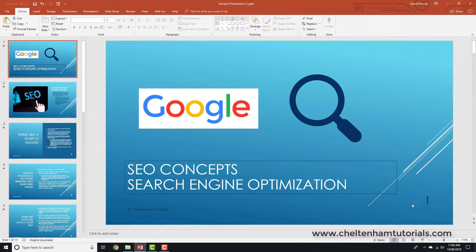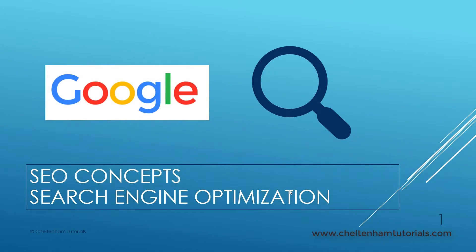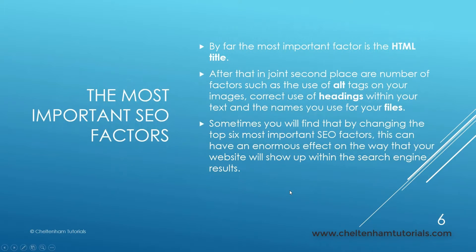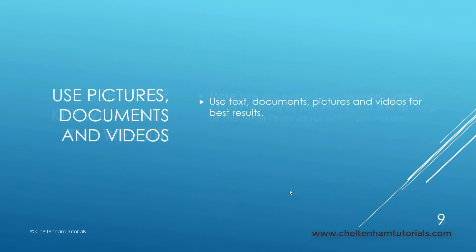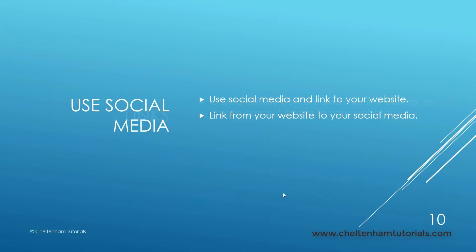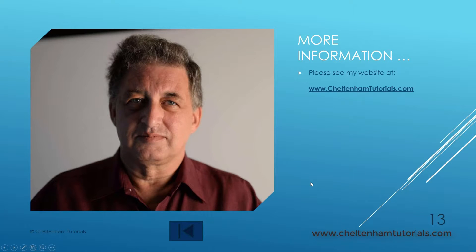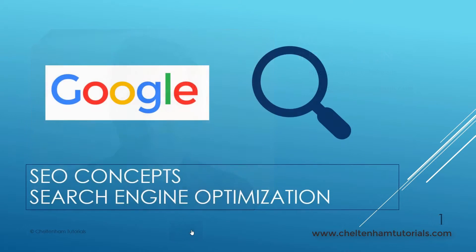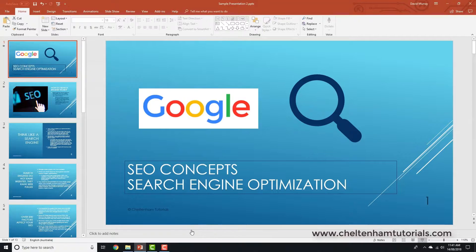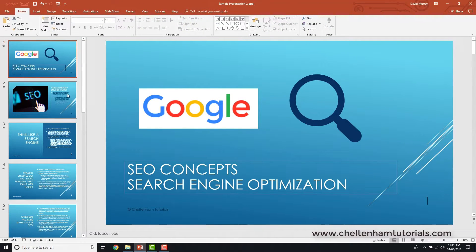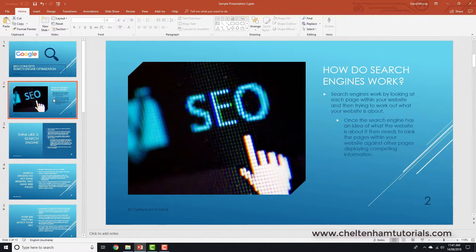I'll go back to the beginning of the presentation and click on the slideshow icon. I'm going through the slideshow and these are the various slides. When I get to this very last slide, normally if I click that would be the end of it, but if I click on the button, it jumps back to the beginning of the presentation. I'll press Escape to come out of this.